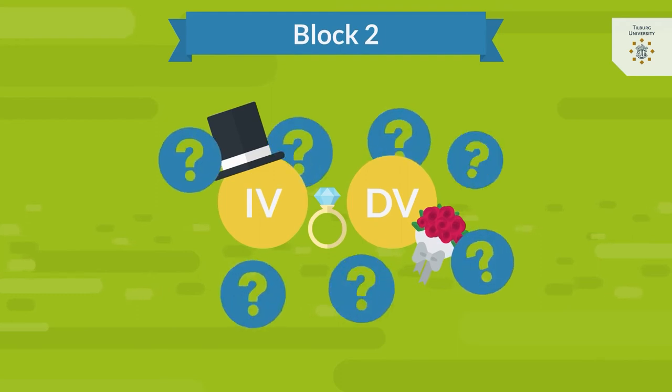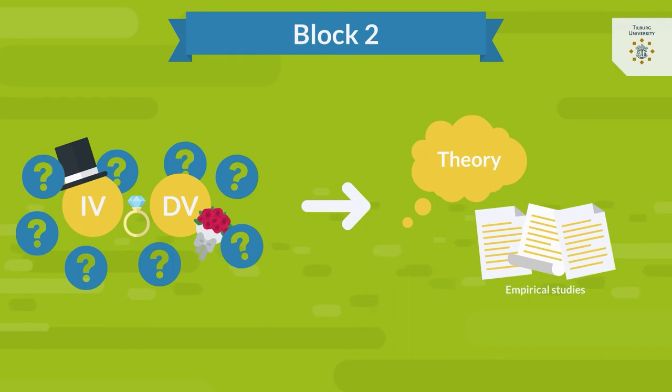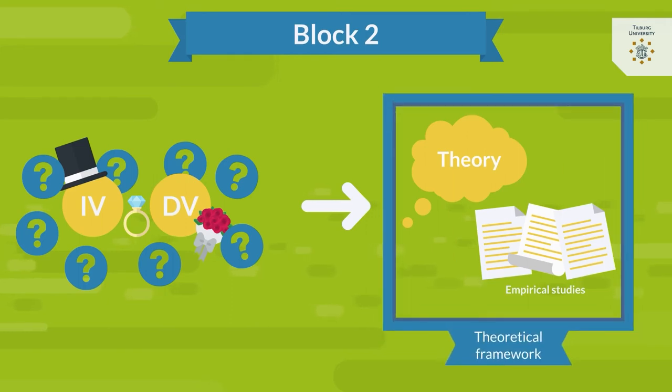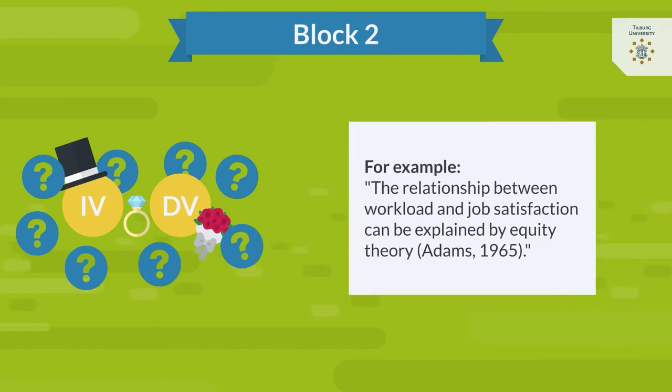The next thing you have to do is underpin why you think there is a relationship between your variables. You do so by referring to a theory and to empirical studies. A detailed explanation of the theory and the empirical articles comes in the theoretical framework, so keep it short at this stage. In our case, we could say the relationship between workload and job satisfaction can be explained by equity theory.